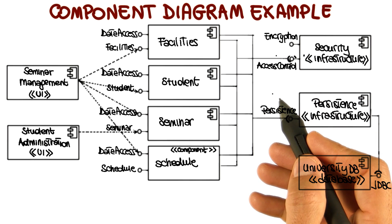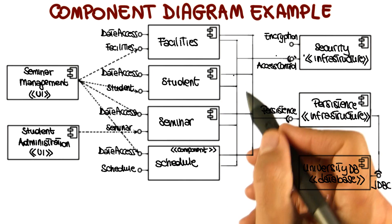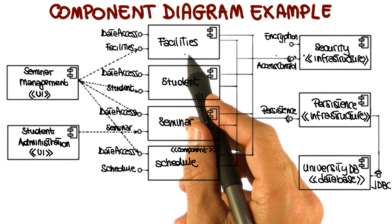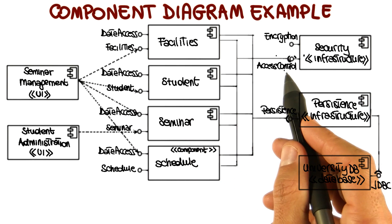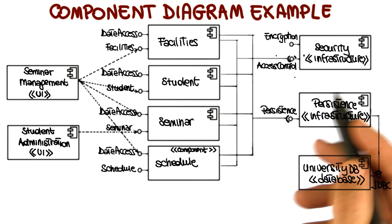The socket, conversely, indicates a required interface. So for example, in this case, it's saying that the facilities component is needing access control capabilities, which by the way, is provided by the security component.